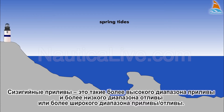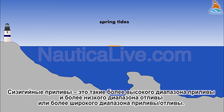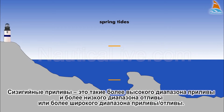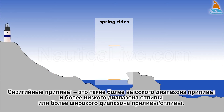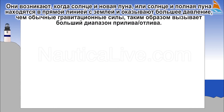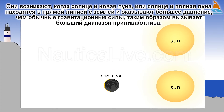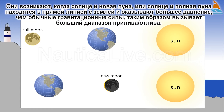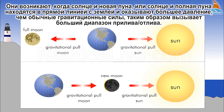Spring tides are those with higher high tides and lower low tides than normal, or a greater range of tide. They occur when the sun and the new moon, or the sun and the full moon, are in a straight line with the earth, exerting a larger than normal gravitational force and therefore causing a greater than usual tidal range.